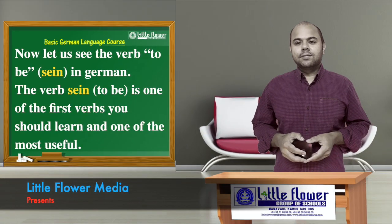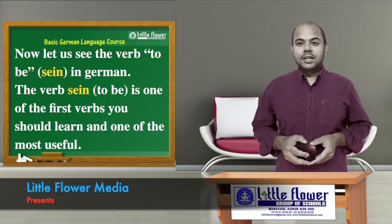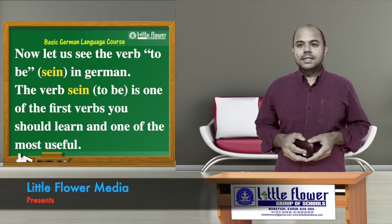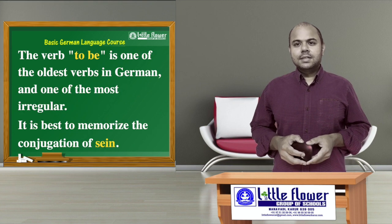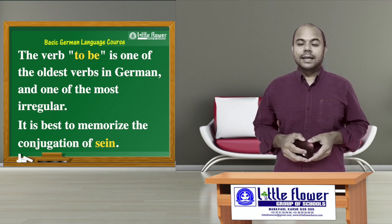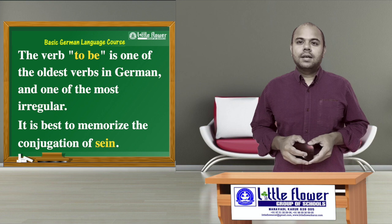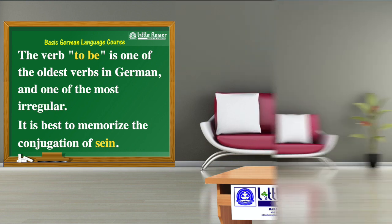Now let us see the verb 'to be' — 'sein' — in German. The verb 'sein' is one of the first words you should learn and one of the most useful. As in most languages, the verb to be is one of the oldest verbs in German and therefore one of the most irregular. It is best to memorize the conjugation of 'sein' right away. Let us look at the present tense conjugation of 'sein' for each pronoun.